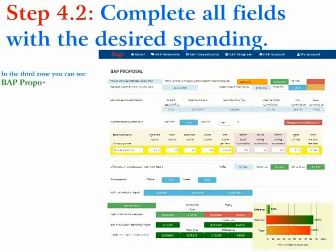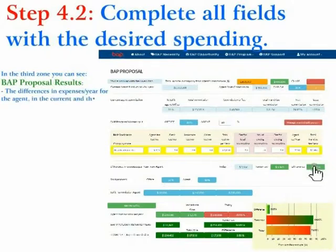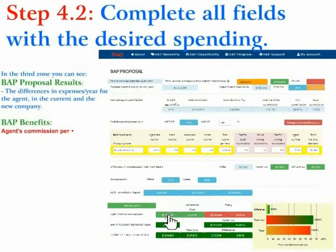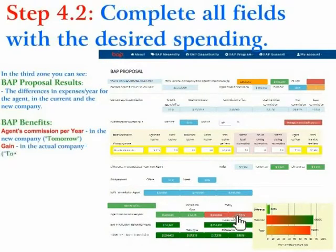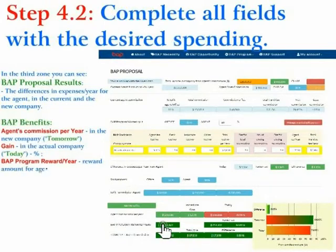In the third zone, you can see B.A.P. Proposal Results: the differences in expenses per year for the agent in the current and the new company. The B.A.P. Benefits — the agent's commission per year in the new company. Gain in the actual company. The B.A.P. Program Rewards per year — the reward amount for agents who work through the B.A.P. Program.